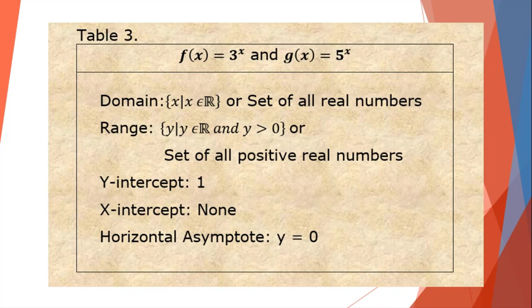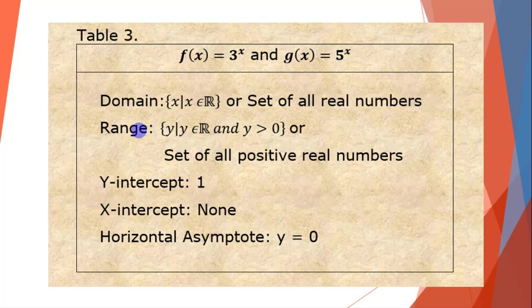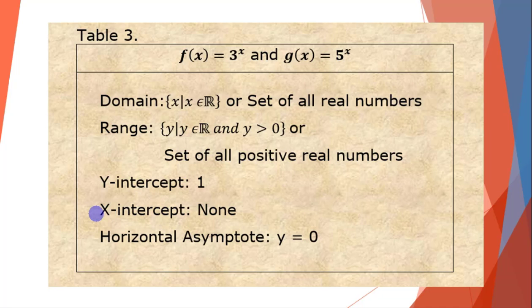Moving on to table 3: the domain, range, intercepts, and asymptotes of f(x) and g(x). They have the same domain — the set of all real numbers. The range is the set of all positive real numbers. The y-intercept of both graphs is 1, meaning both touch the y-axis at y = 1. There is no x-intercept, and both graphs have a horizontal asymptote y = 0.